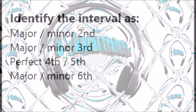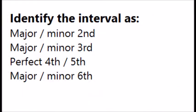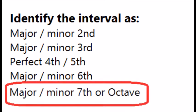In the previous videos you practiced intervals of up to a major 6th, namely a minor and major 2nd, 3rd and 6th, and the perfect 4th and 5th. If you have not watched these videos you should do so now before watching this advanced video where we will add the intervals of a major and minor 7th and the octave.